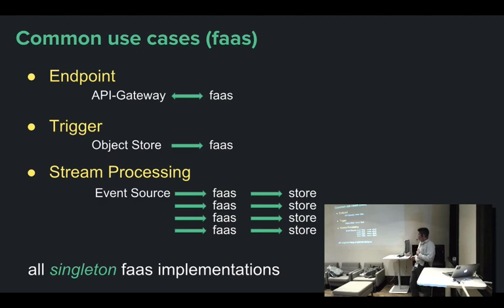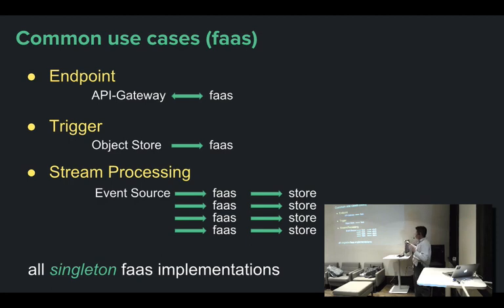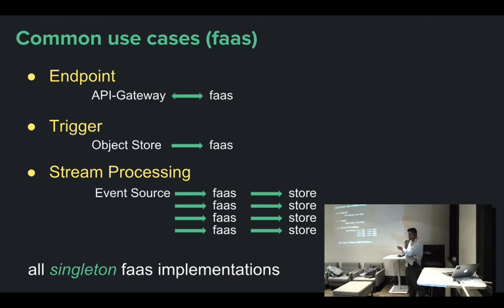Stream processing with serverless is not like traditional map-reduce big jobs — it's a different type where you have a whole bunch of functions running in parallel, each taking different pieces of data from the stream. The point I'm trying to make is these are all cases where you can use a function as a service, but each one is doing a really particular job. It's not really part of an entire system.